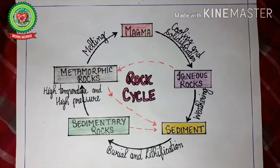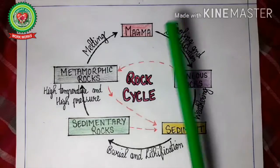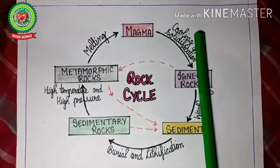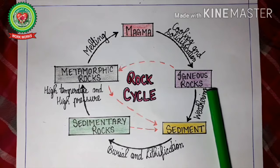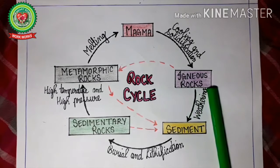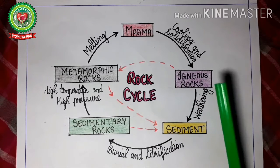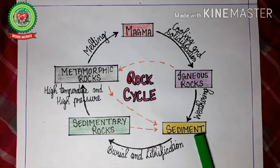Let us discuss the rock cycle with this diagram. In this diagram we can see the hot molten rocks inside the earth, that is magma. When it cools down and solidifies, it changes into igneous rocks. Igneous rocks — the hardest and primary rocks, the first rocks to be formed on the earth — when weathered, change into sediment.